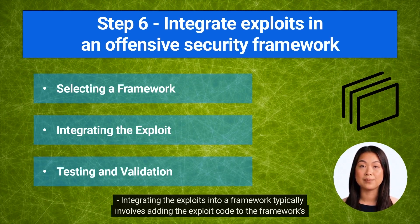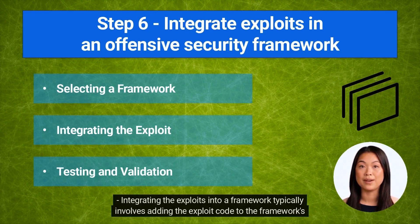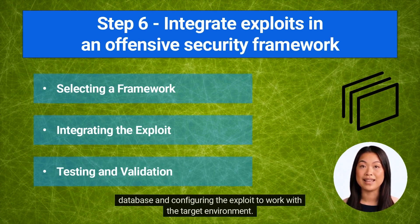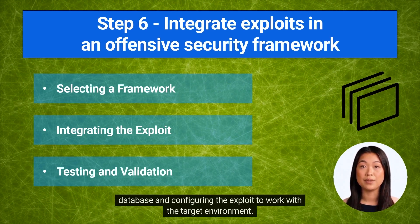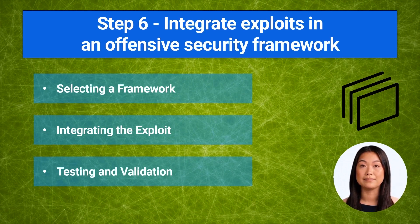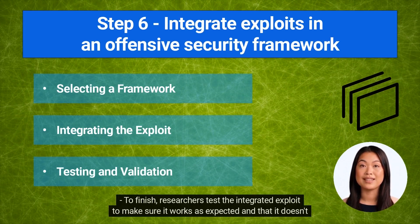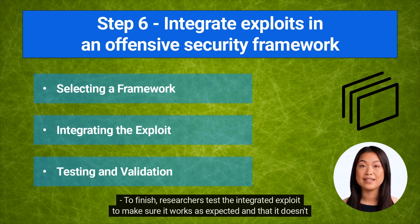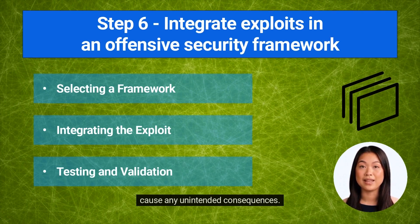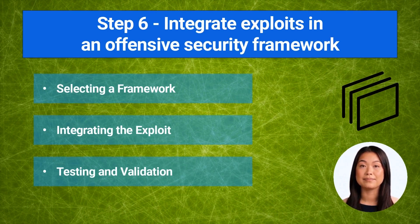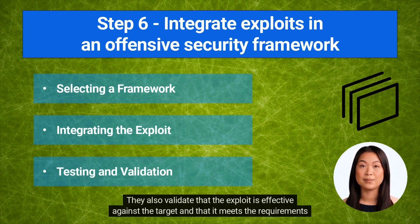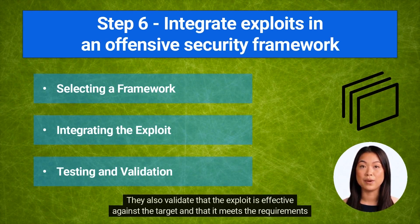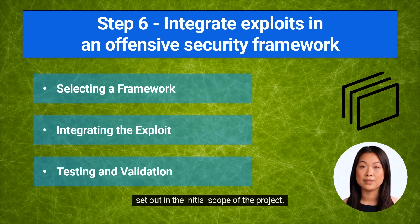Integrating the exploits into a framework typically involves adding the exploit code to the framework's database and configuring the exploit to work with the target environment. Researchers then test the integrated exploit to make sure it works as expected and doesn't cause any unintended consequences. They also validate that the exploit is effective against the target and that it meets the requirements set out in the initial scope of the project.